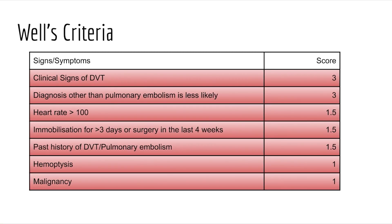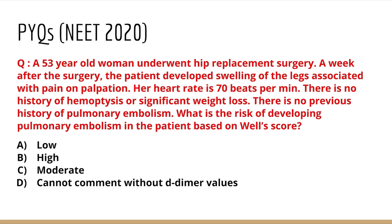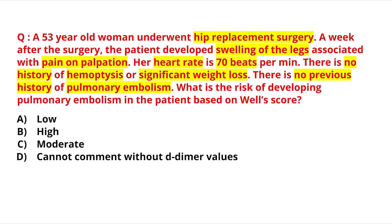Now let's apply this to the question. A 53-year-old woman underwent hip replacement surgery, and a week after surgery she developed swelling of the legs associated with pain on palpation. Her heart rate is 70 beats per minute. There is no history of hemoptysis or significant weight loss, and no previous history of pulmonary embolism. We will highlight the important points to calculate the score.